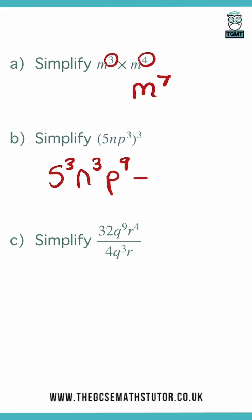To work this out though, we do need to simplify that 5 to the power of 3, which is 125. So we have 125, n to the power of 3, p to the power of 9.